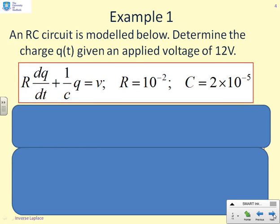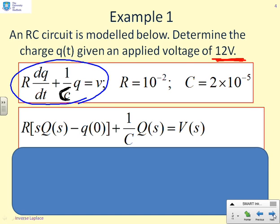An example then. Consider an RC circuit, which can be modeled by a simple first order ODE given there. And there's a little typo in this equation that C should be a capital C. But I'm sure that won't bother you too much. You're given the values of R, 10 to the minus 2, and C, 2 times 10 to the minus 5. And you're also given that the applied voltage is 12 volts. And what you need to do is say, I would like you to solve for the response of this system. In other words, how does the charge change with time?